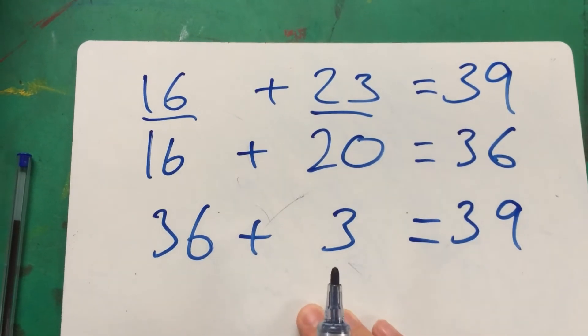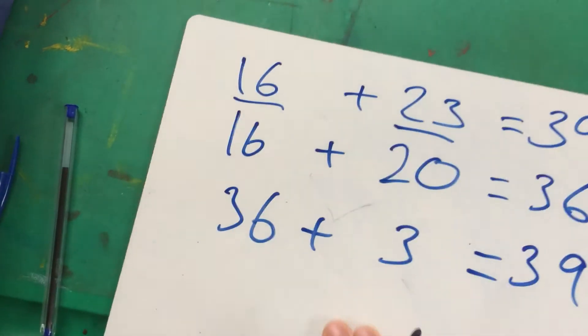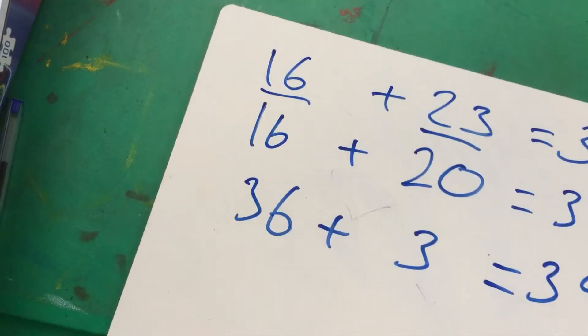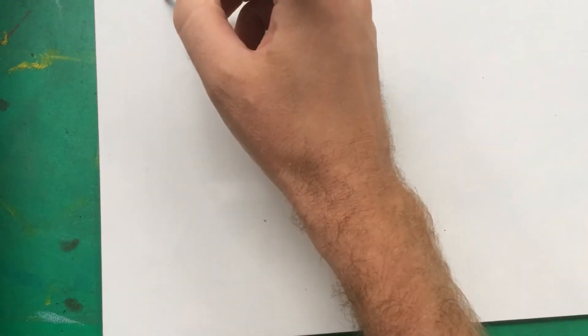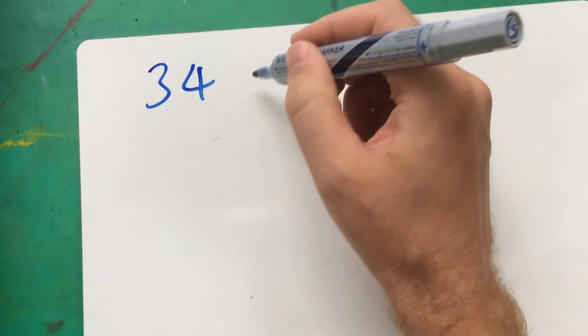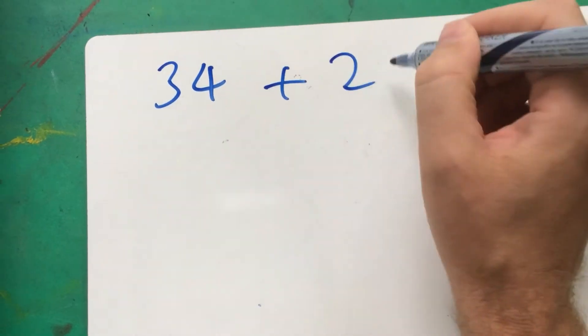Now, practice makes perfect, so let's try it one more time just to make sure that we know what we're doing. And we'll choose another made-up number. Let's say 34 plus 25.